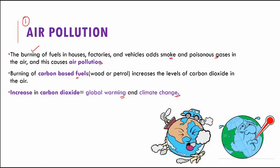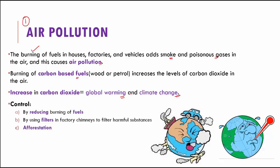How can we prevent air pollution? We can prevent it by three main methods. First, reduce the amount of burning fuel. Second, control it by using filters in factory chimneys to filter out harmful substances. Third, control it by afforestation — planting more and more trees, because trees take in carbon dioxide and give out oxygen, thereby rejuvenating our environment with clean air.